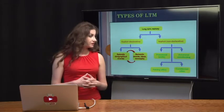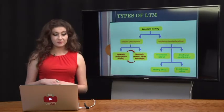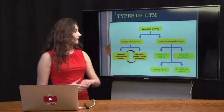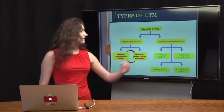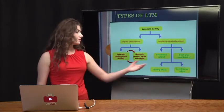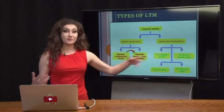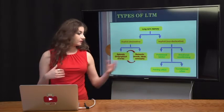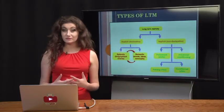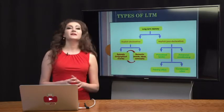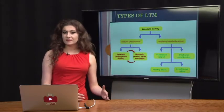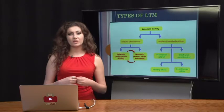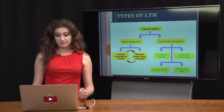Declarative memory is also called explicit memory, and non-declarative memory is also called implicit memory. Implicit and non-declarative memory is related to automatic processing — things we do without thinking. Explicit and declarative memory is more related to controlled processing, where you're actually having to try to retrieve information from long-term memory.